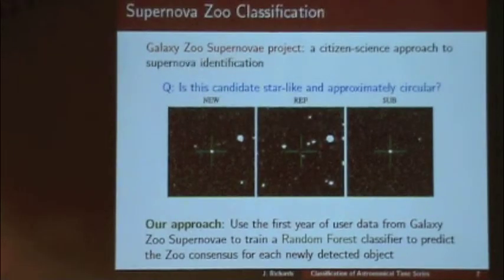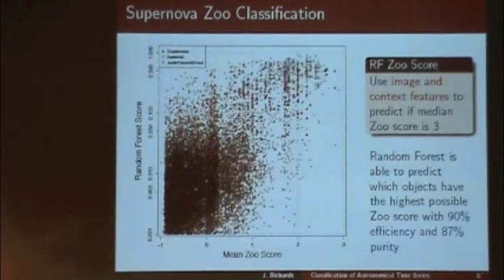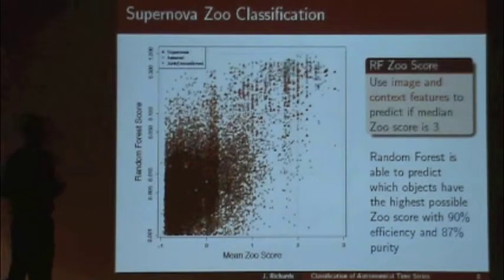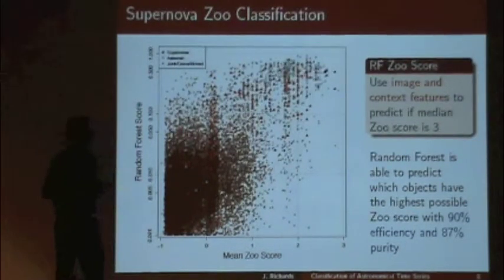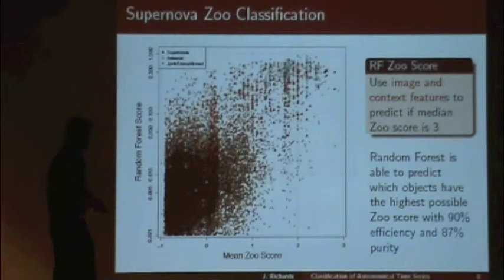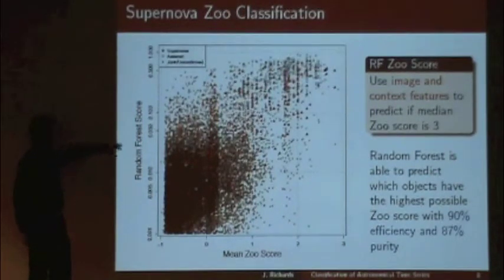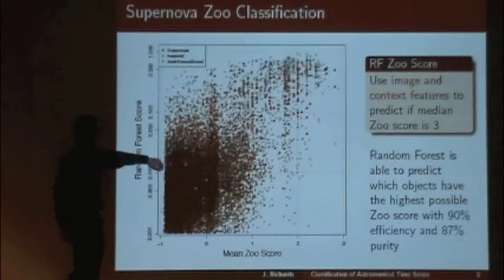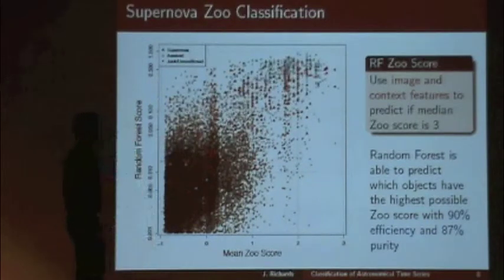Our question is: could we do supervised learning on this problem to instantaneously reproduce what the zoo would say? We use only features available at the time of detection — features based on the images plus contextual features, maybe information from other surveys. We see a pretty good correspondence between what the people say (the zoo score) versus our random forest classifier probability. The correspondence is pretty good.